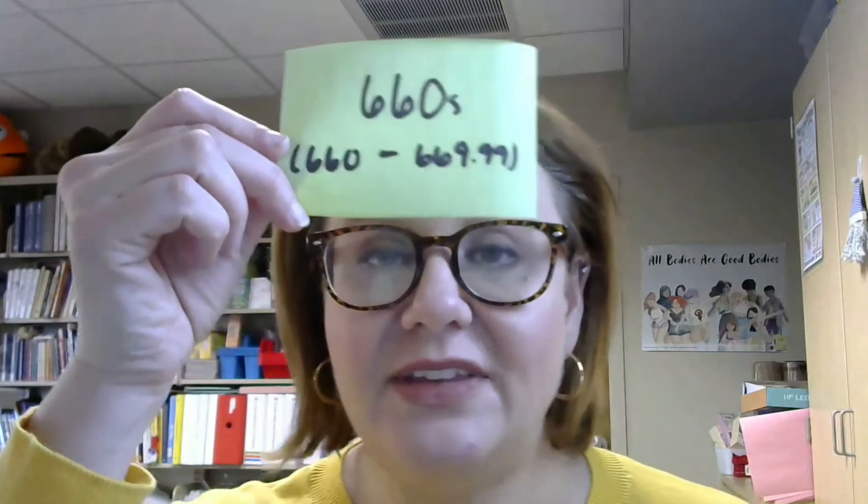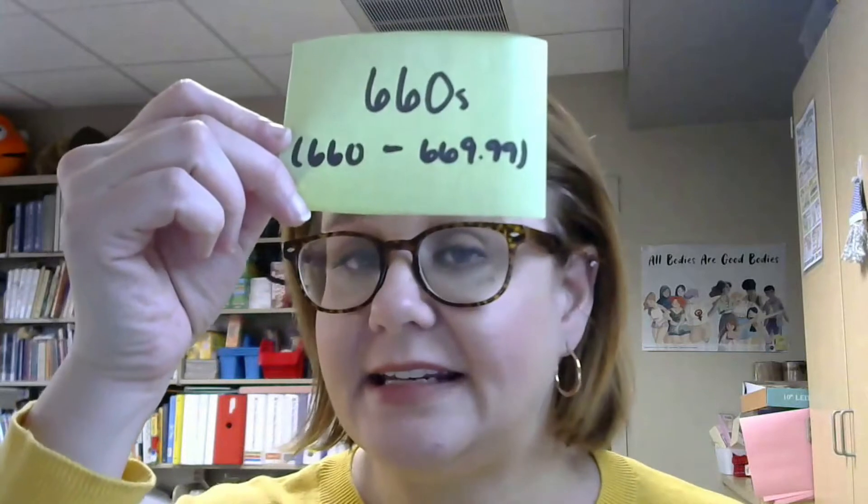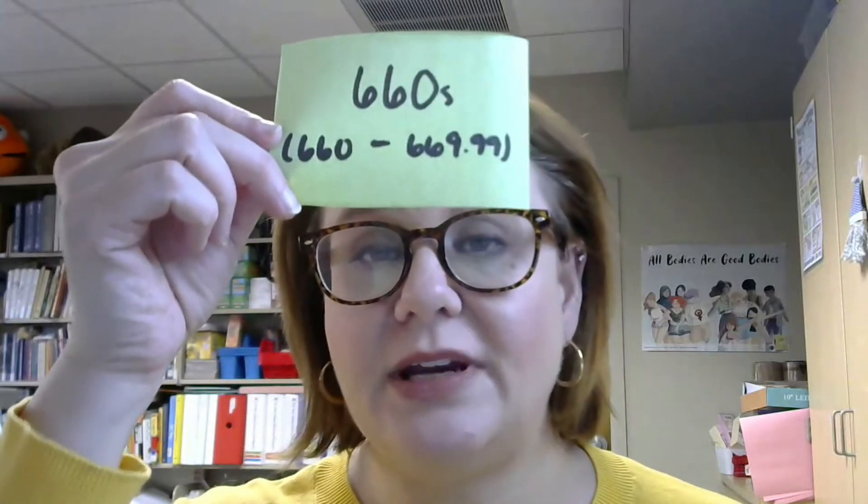Next we have the 660s — that's 660 to 669.99 — and this is specifically chemical engineering. So earlier we talked about more general engineering and different types of engineering, but the 660s focuses specifically on chemical engineering. It kind of marries the engineering from the 600s to chemistry, which is found in the 500s. So chemical engineering gets its own little category there.